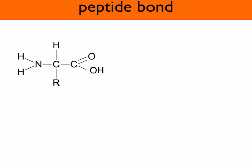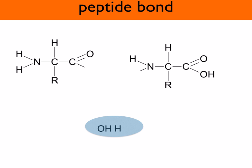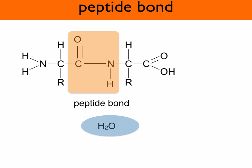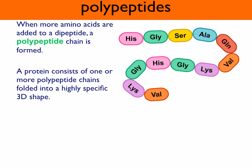Let's look at how a peptide bond is formed. When one amino acid joins with another, a water molecule is removed — this is called condensation — and a peptide bond forms. The peptide bond is a covalent bond between the amino acids, forming between the carbon of one amino acid and the nitrogen of another. When more amino acids are added to a dipeptide, a polypeptide chain is formed. A protein consists of one or more polypeptide chains folded into a highly specific 3D shape.